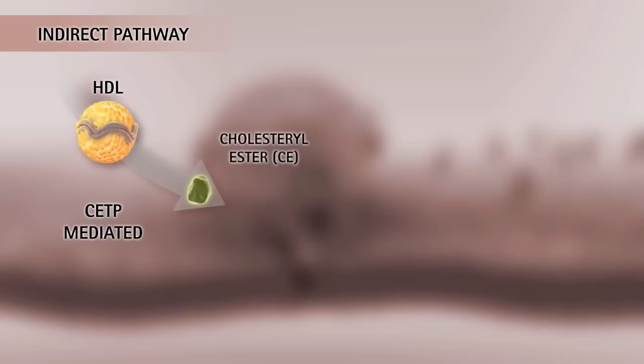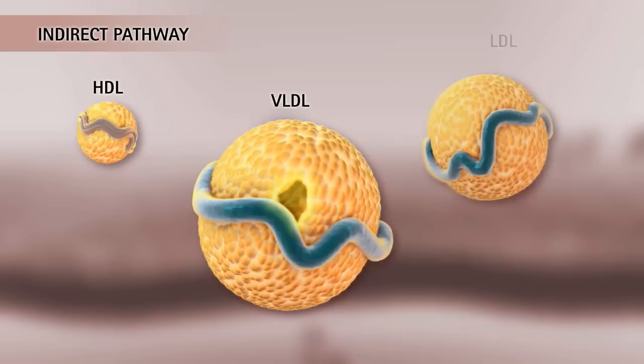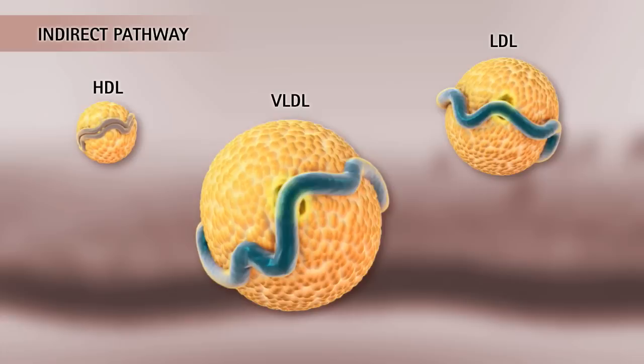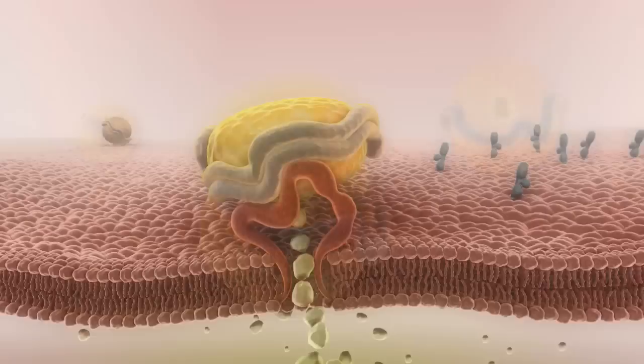HDL also passes cholesterol to the liver through an indirect pathway via cholesterol ester transfer protein, or CETP. CETP facilitates the exchange of cholesterol in HDL for triglycerides in the triglyceride-rich APO B particles, VLDL and LDL. In this one-to-one exchange, HDL is enriched with triglycerides and LDL with cholesterol. LDL particles may then go into circulation or interact with LDL receptors at liver cells, depositing their cholesterol ester content.